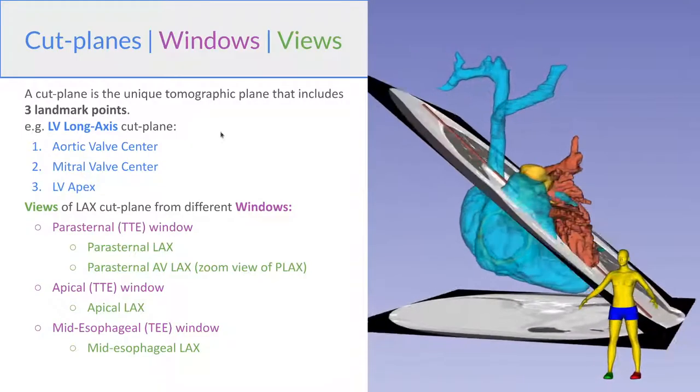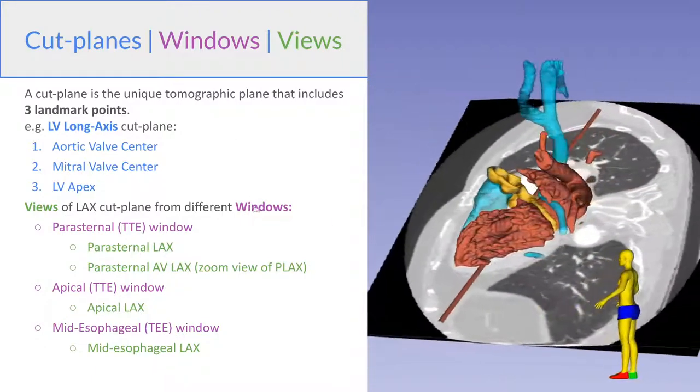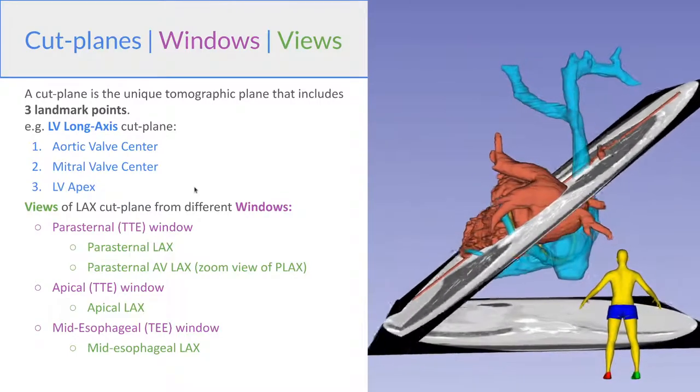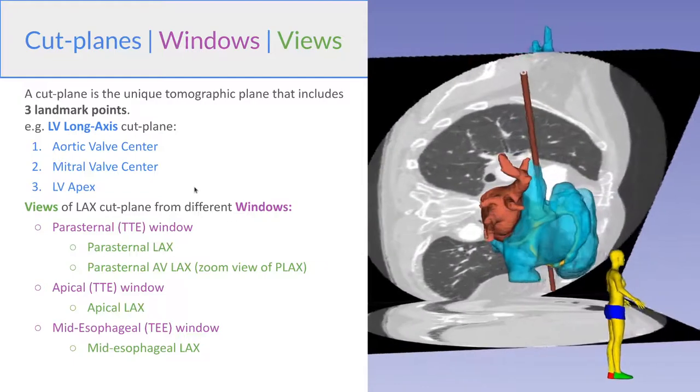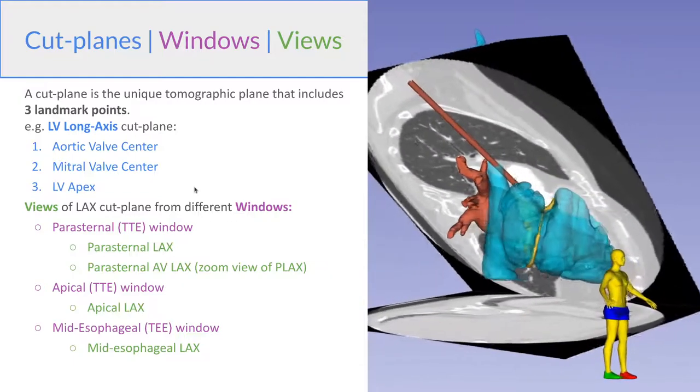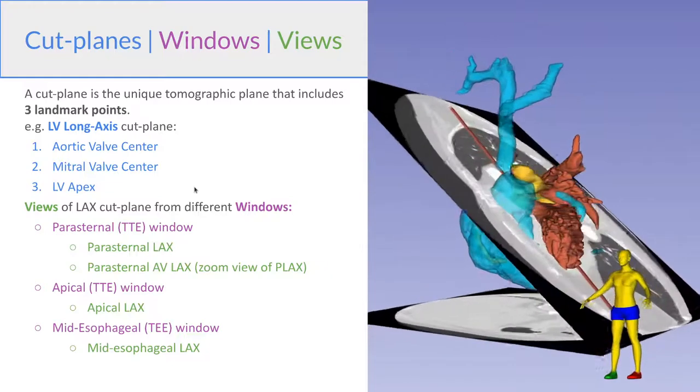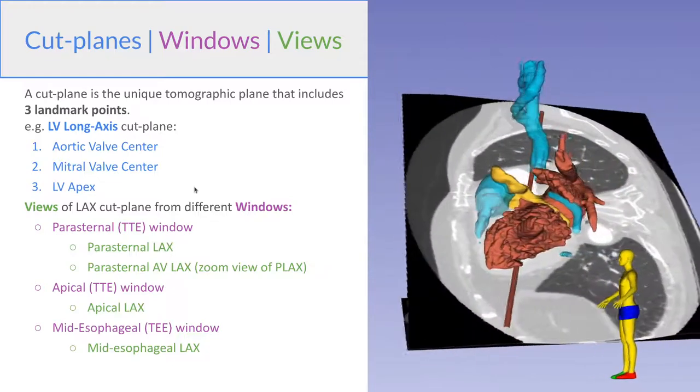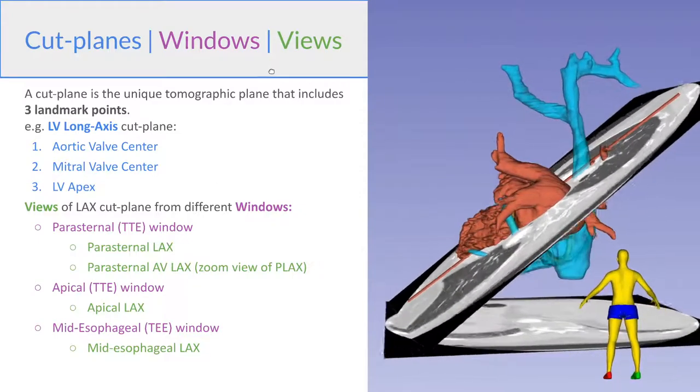So next we're going to look at the cut planes, windows, and views. That's an important distinction. So the cut planes are tomographic planes that can be sort of visualized based on three-point landmarks. So for example, for the LV long axis cut plane, it includes the aortic valve center, the mitral valve center, and the apex. And there are multiple windows from which we can view parts of that cut plane.